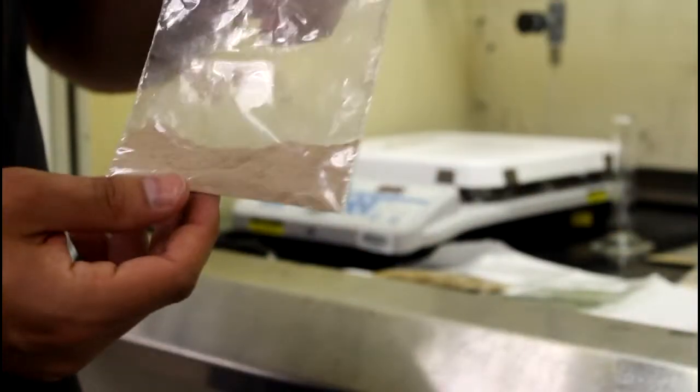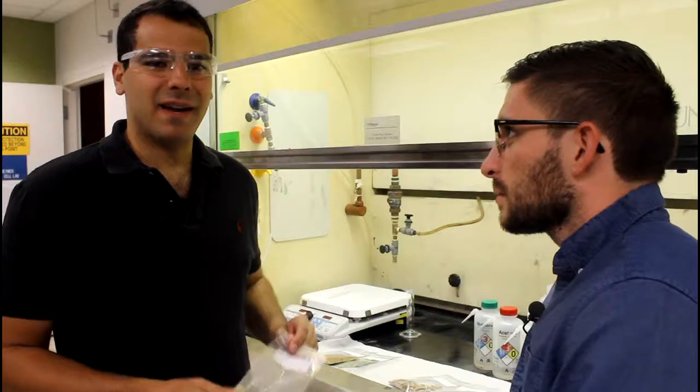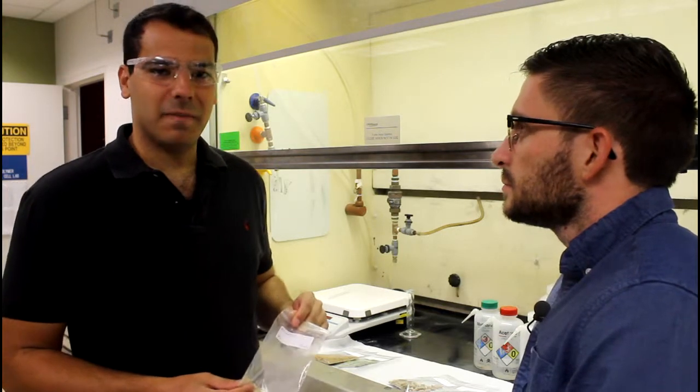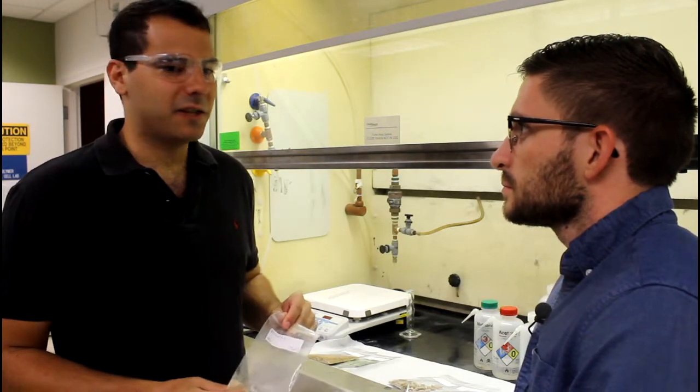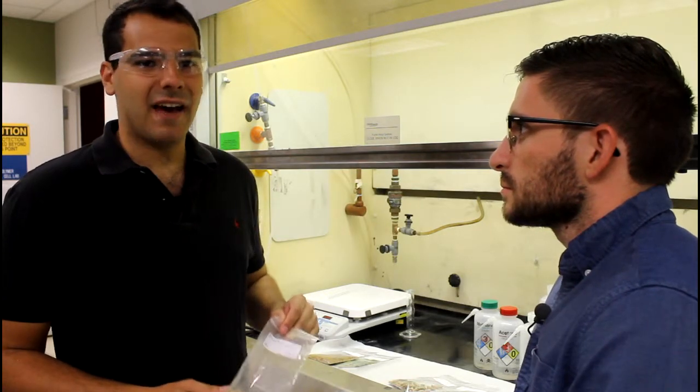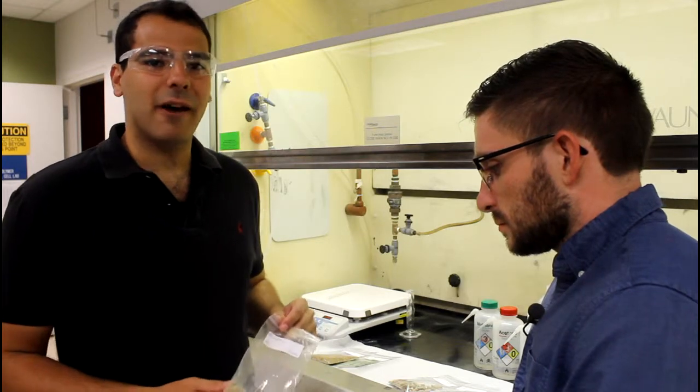Another one we have is miscanthus, and the scientific name is miscanthus giganteus, so it grows really, really big. They use it a lot as a biomass feedstock in Europe, but it's an invasive plant species, so it's very difficult to bring it over to the U.S. They're working now on permits to have large swaths of land start growing miscanthus to be broken down as a biomass feedstock.